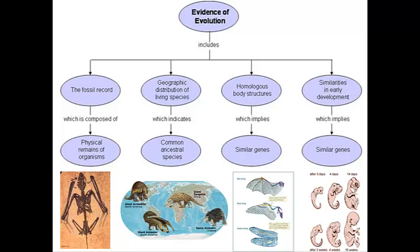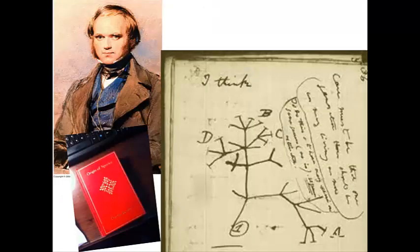In 1859, Charles Darwin published The Origin of Species by Means of Natural Selection. The book accomplished two things: it presented evidence to support the idea of evolution, and proposed a mechanism for evolution called natural selection.